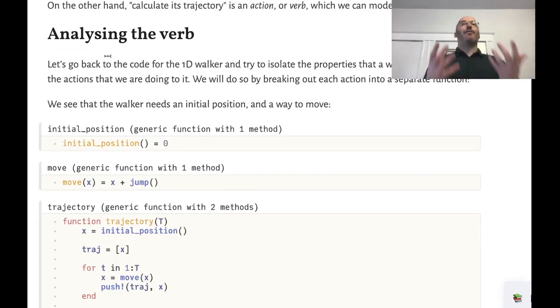So let's analyze the verb. As in a previous video we can think about verbs and nouns. So here we have nouns which are the random walker objects and they are moving around and we want to calculate the trajectory and that calculation of the trajectory is a verb.